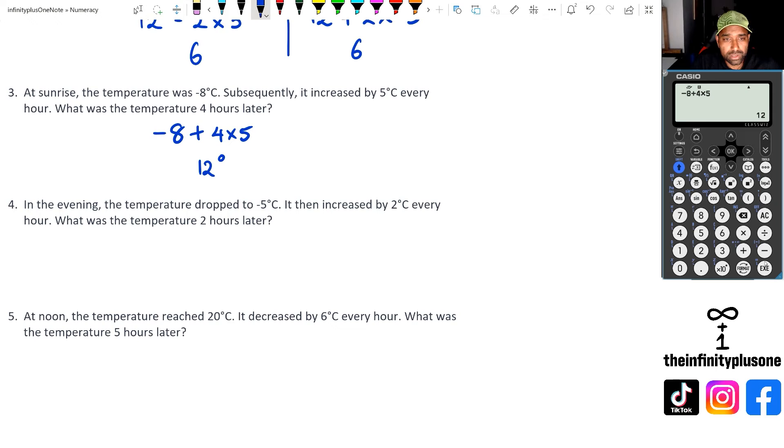Looking at number four, the temperature dropped to minus five degrees, but then it increased by two degrees every hour. So two hours, two degrees, so two times two. Negative five plus four is what we're going to get. Negative five plus four, which is equal to negative one degree.